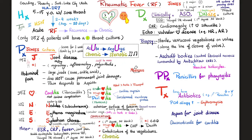We have major criteria and minor criteria for Jones. Major criteria: joint disease, carditis, subcutaneous nodules, erythema marginata, and Sydenham's chorea. How do we diagnose rheumatic fever? Clinically by the Jones criteria: two major criteria, or one major and two minor. Minor Jones criteria include high ESR, high CRP, fever, joint pain, increased neutrophilic count, prolonged PR interval on ECG, and previous rheumatic fever.